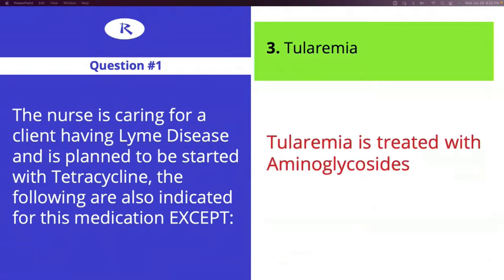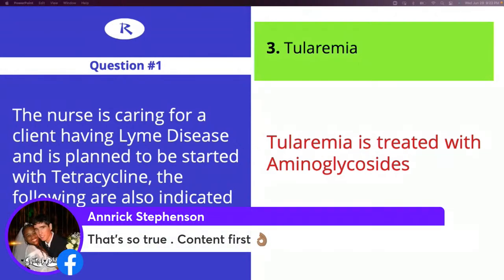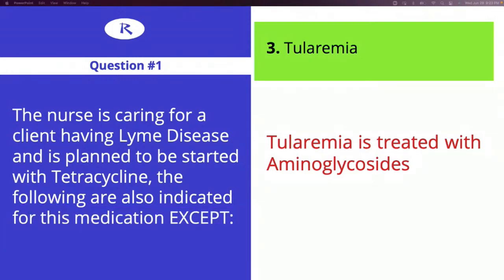Tularemia is going to be treated with aminoglycosides, which are different. Penicillins and aminoglycosides are different from tetracyclines. Look up this condition if you don't know what it is — it's something you probably won't have to worry about catching personally, but you need to know what it is for NCLEX.